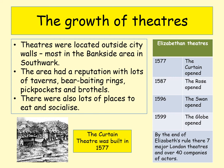The Bankside area had not a particularly great reputation, with lots of taverns, bear baiting rings — rings where people could watch fighting between animals like bears — pickpockets and brothels, and lots of places to eat and socialise. It was sort of the rowdy area of London. Many of the original theatres were actually set up so that if they didn't make money from acting, they could easily be converted into a bear baiting ring.